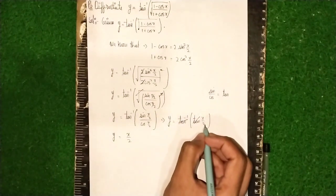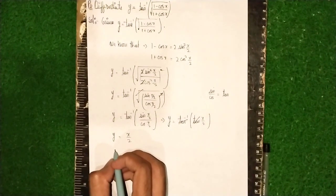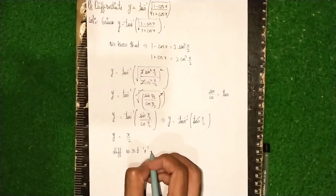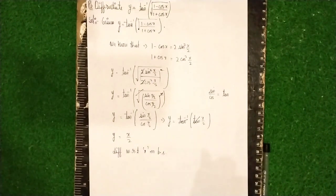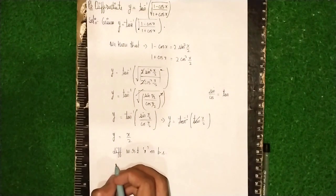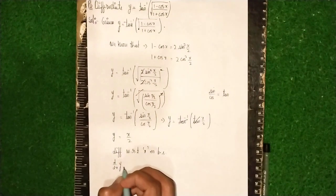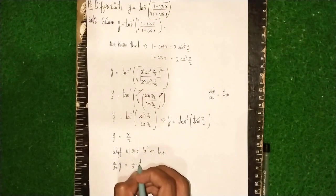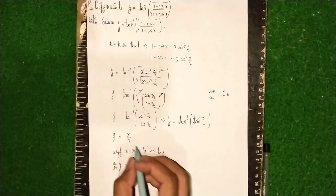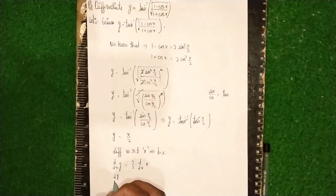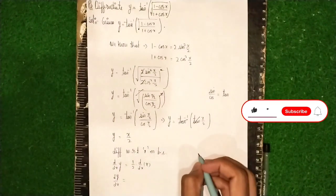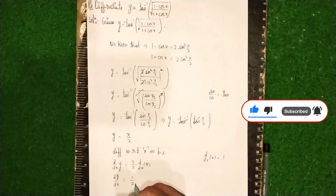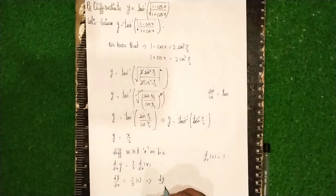What remains is y is equal to x by 2. Now we differentiate with respect to x on both sides. So d by dx of y gives dy by dx, and the derivative of x by 2 — taking the 2 outside — is 1 by 2 into d by dx of x, which is 1 by 2 into 1.